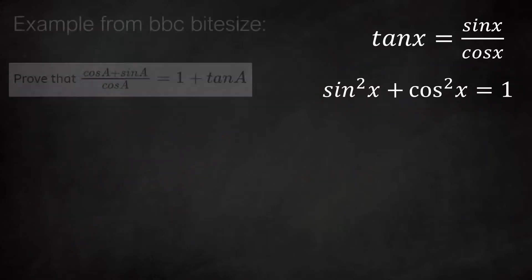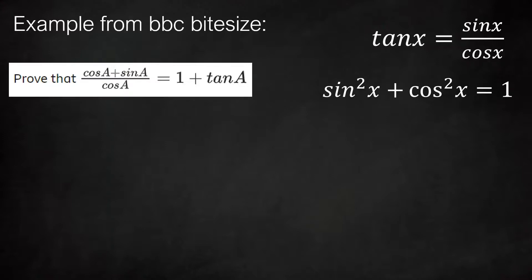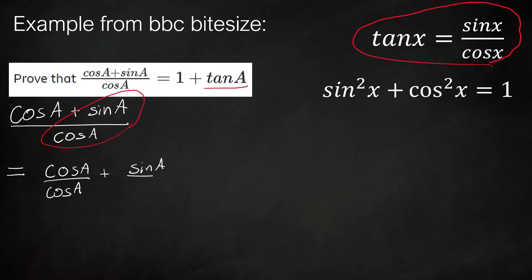One last example, taken from BBC Bitesize. It's a slightly different type of question where we're trying to prove something. You take the left hand side and prove it equals the right hand side. We write down the left hand side: cos A plus sine A over cos A. We notice there's a tan A in the answer, so we're probably going to use the tan identity. On the left hand side there's sine A over cos A, so we can probably use the identity, but not yet because they're both part of the fraction. We need to split up the fraction first. Let's split it up into cos A over cos A plus sine A over cos A. We can do this because when adding fractions with the same denominator, we combine the numerators. We're just going backwards, splitting up the fraction into two separate fractions, which is perfectly fine.